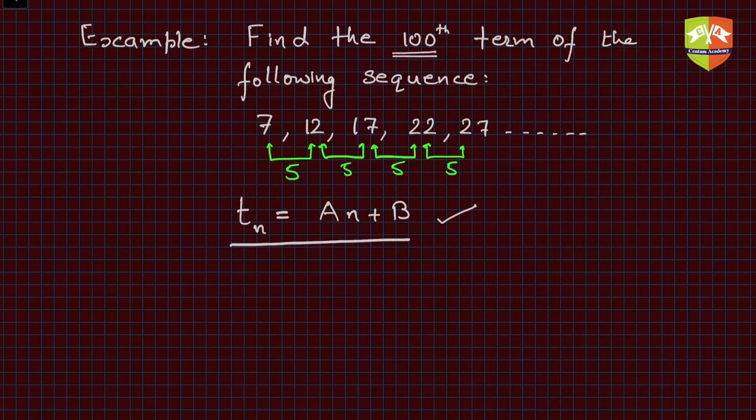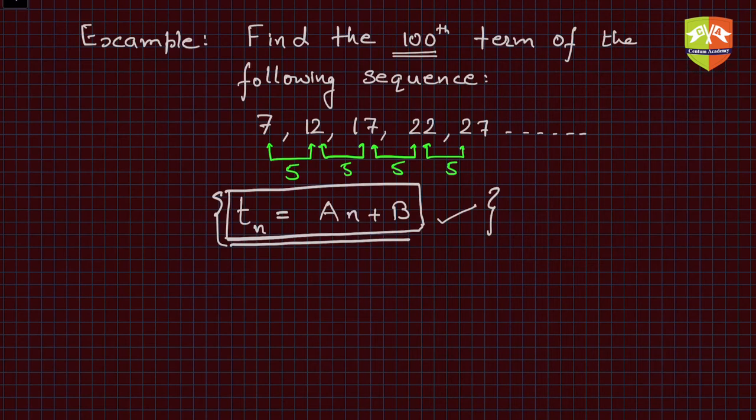We'll find out the nth term in this case. Here it's been given to find the 100th term. If I somehow get this relationship, then if I deploy n = 100, I will get the 100th term. Just to re-emphasize: if the consecutive terms have constant difference for the entire sequence, then any term can be expressed as tn = An + B, where A and B are constants and n is the term number.